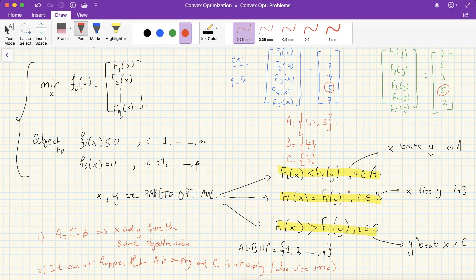In other words, when we compare two Pareto optimal points, they either obtain the same performance, that is, in all objectives they are equal, that is A and C are empty, or each beats the other in at least one objective. So A and C are both non-empty or empty together.